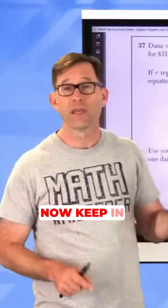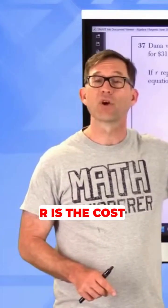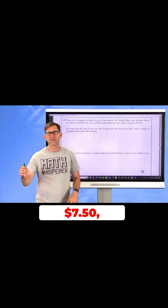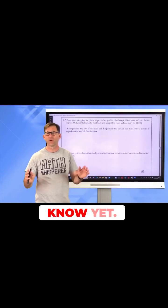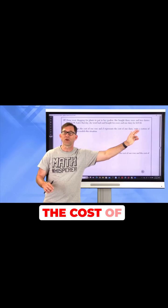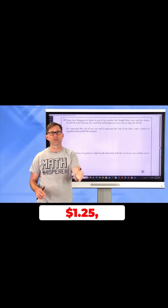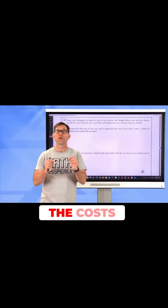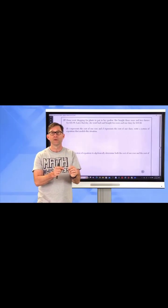Okay, now, keep in mind, R is the cost of one rose, whatever it is, $3.25, $7.50, I don't know yet. And D represents the cost of one daisy, maybe it's $1.25, maybe it's $2.50, again, I don't know yet. But they're the costs of a single rose and a single daisy.